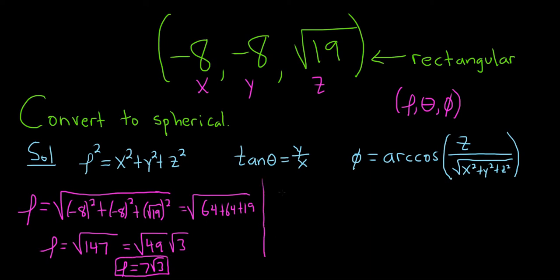To figure out the tangent of theta, the first thing we should always try to do is use the formula. So it's y over x, so it's negative 8 over negative 8. So the tangent of theta is 1.